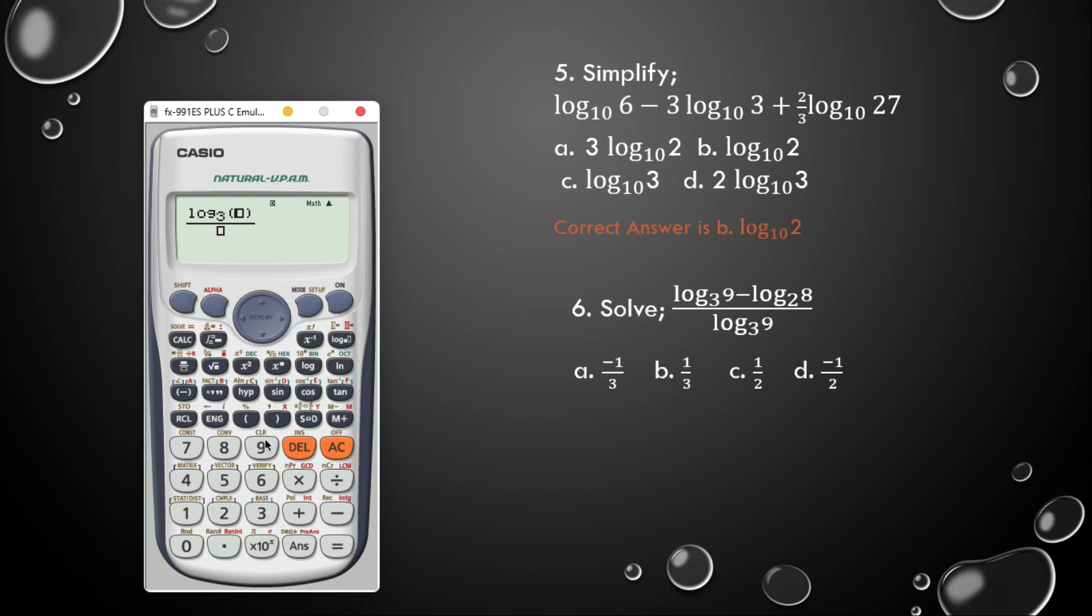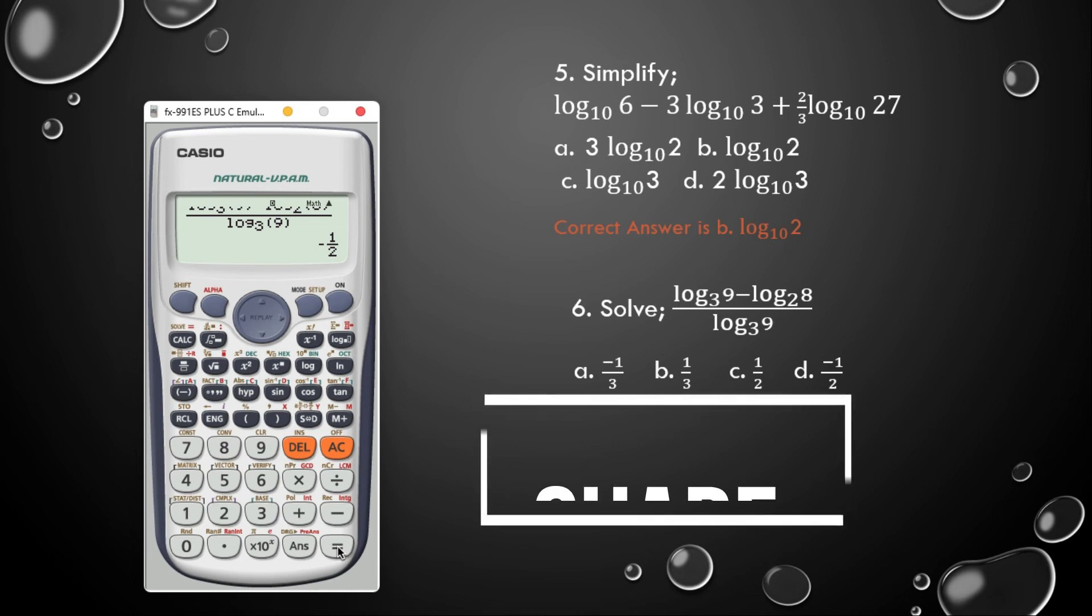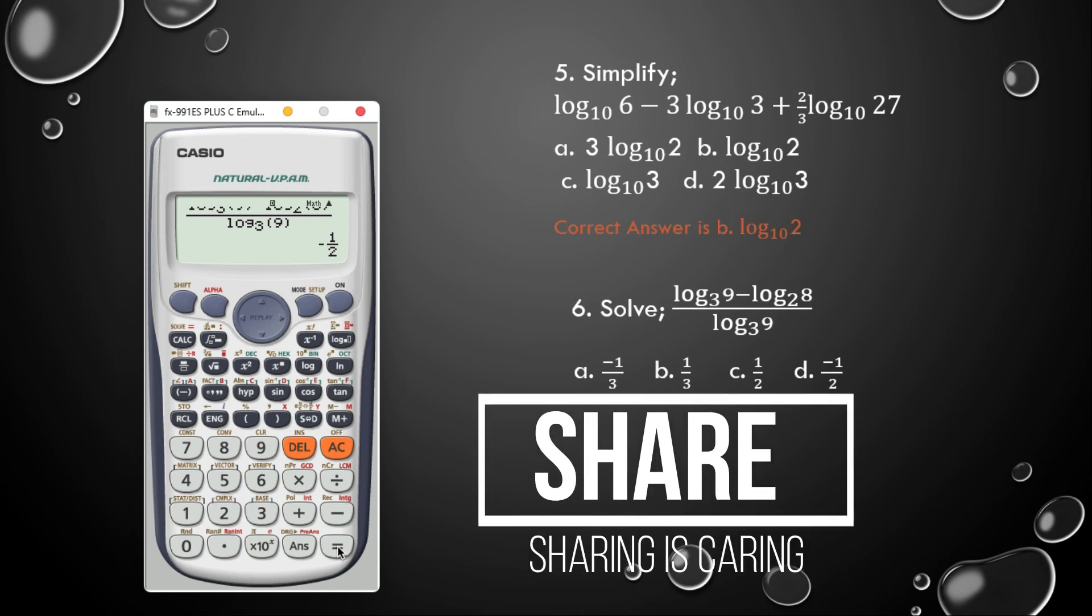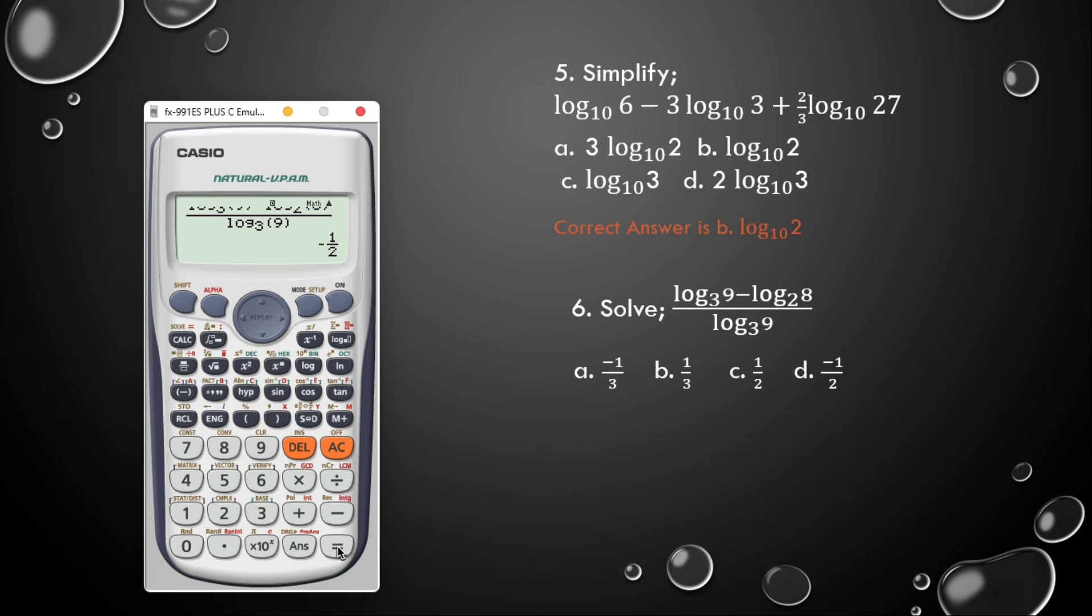I get log 9 to the base 3, log 9 to the base 3, minus log of 8, sorry log of 8 to the base 2, log of 8 to the base 2, then log of 9 to the base 3, log of 9 to the base 3. Alright, hit the equal sign. So our answer here is negative 1 over 2. Believe you are beginning to love the calculator work, and so hit the subscription button, like and share for more of such videos to come. Alright, so our correct answer here is D. Don't waste time in the examination.